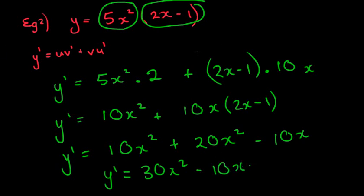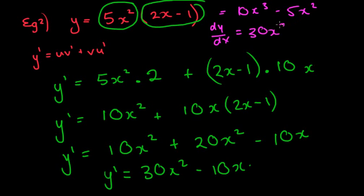Let's quickly check this. If I do it the first way: 5x² times 2x equals 10x³ minus 5x². If I differentiate this with respect to x, we get 30x² minus 10x. The answers are the same. You might think that's an easy way, and I agree — but let's look at the next question, example 3, and you'll understand why we need to use the product rule.